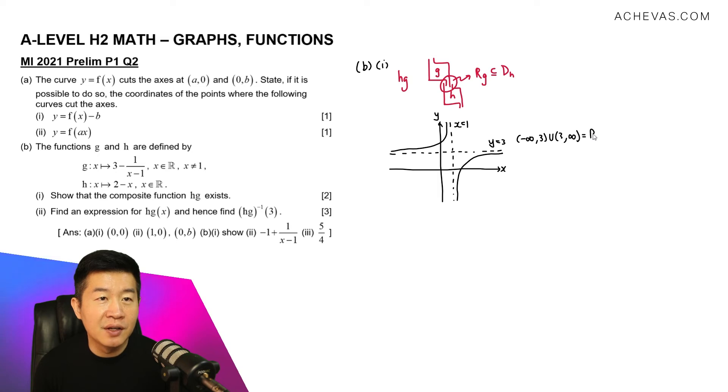As for the domain of h, which is all real numbers, it is just going to be from minus infinity to infinity. So this is definitely a subset. Based on this, we can then conclude that the composite function hg exists.